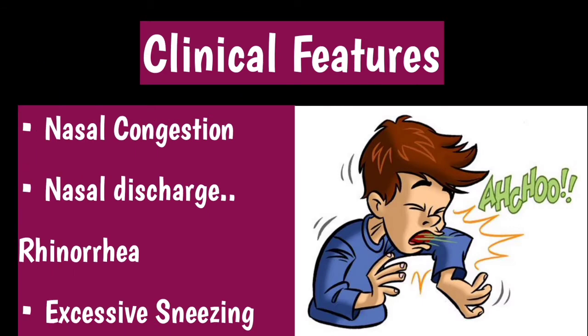The three main clinical features of acute viral rhinitis are nasal congestion or nasal stuffiness, nasal discharge also known as rhinorrhea which is watery and profuse but may become mucopurulent due to secondary bacterial invasion, and excessive sneezing.